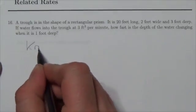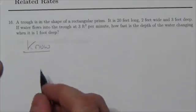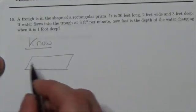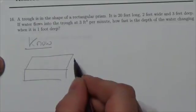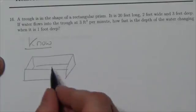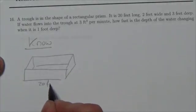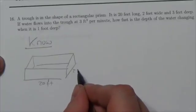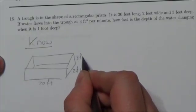Okay, let's take a look here. What do we know? Well, let's draw this out. We've got this rectangular prism here. We know that this thing is going to be 20 feet long. It is 2 feet wide and 3 feet deep.